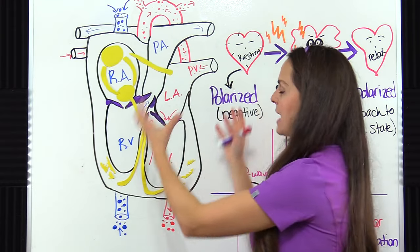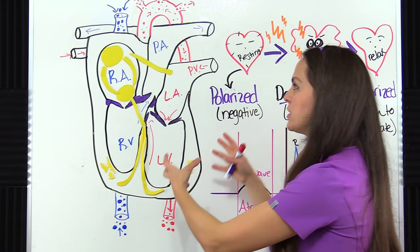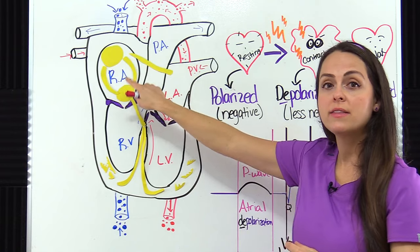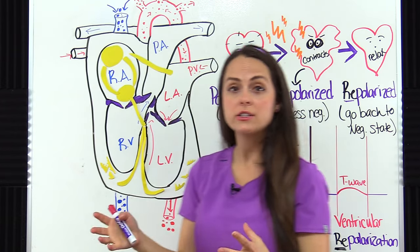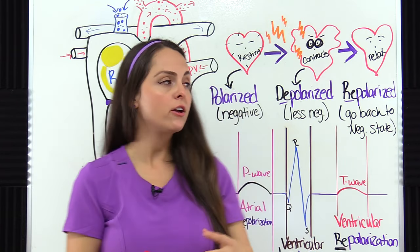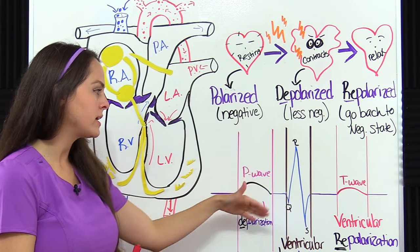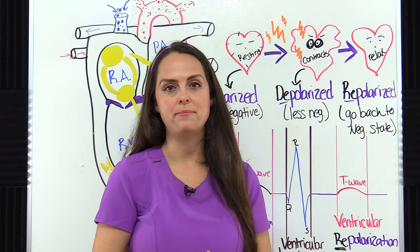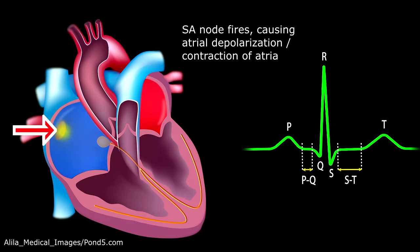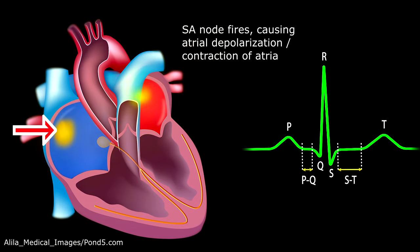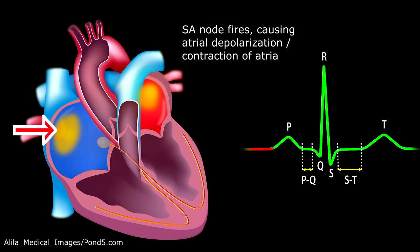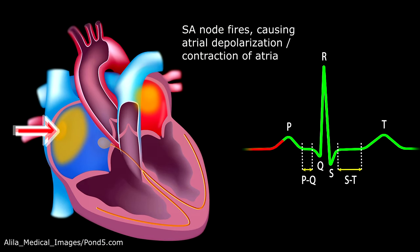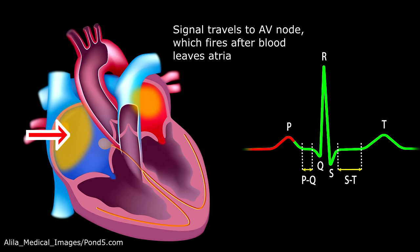So whenever I refer to ventricle repolarization, I'm talking about the relaxation of the ventricles. Now let's see the heart in action — how it actually contracts and relaxes whenever it is stimulated by this electrical conduction system, creating this PQRST complex, by looking at this animation. First, the SA node fires, and this causes atrial depolarization, which causes the atria to contract. Then the signal goes down to the AV node.